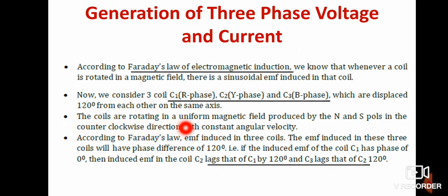The coils rotate in the uniform magnetic field in the counterclockwise direction with constant angular velocity omega. According to Faraday's law, an EMF is induced in the three coils with a phase difference of 120 degrees apart. If the induced EMF in coil C1 has a phase of 0 degrees, then the induced EMF in coil C2 lags C1 by 120 degrees, and C3 lags C2 by 120 degrees.